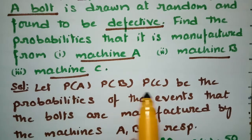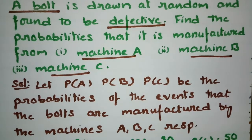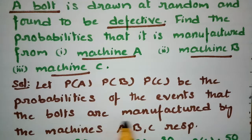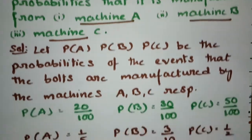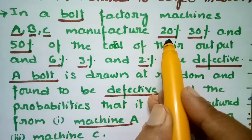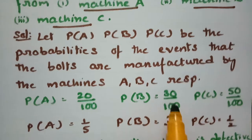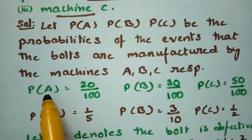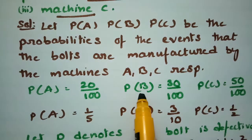Let P(A), P(B), and P(C) be the probabilities of events that the bolts are manufactured from machines A, B, and C respectively. So P(A) = 20/100 = 1/5, P(B) = 30/100 = 3/10, and P(C) = 50/100 = 1/2.